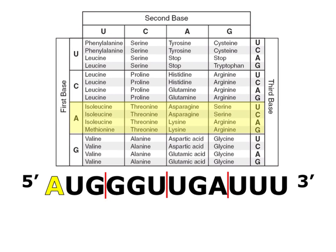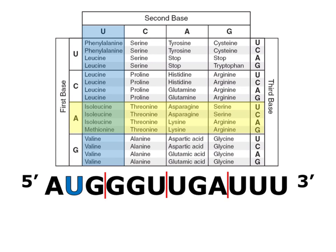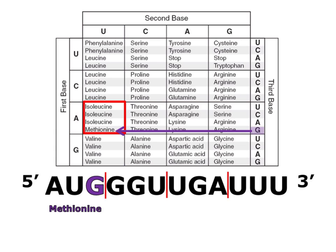In my first codon, the first base is A, so I look at the A row in my codon chart. My second base is U, so I'll look in the U column. We'll find our answer in the box where this row and column meet. Now we'll use the third base to determine which amino acid in this box is the correct answer. In this case, methionine is the amino acid we're looking for.